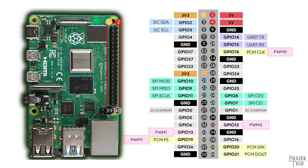PWM is another function supported on the Pi's GPIO header. PWM stands for Pulse Width Modulation, and is typically used for controlling the speed of motors, the brightness of LEDs, and a few other similar applications. It works by creating a square wave at a specific frequency and duty cycle.